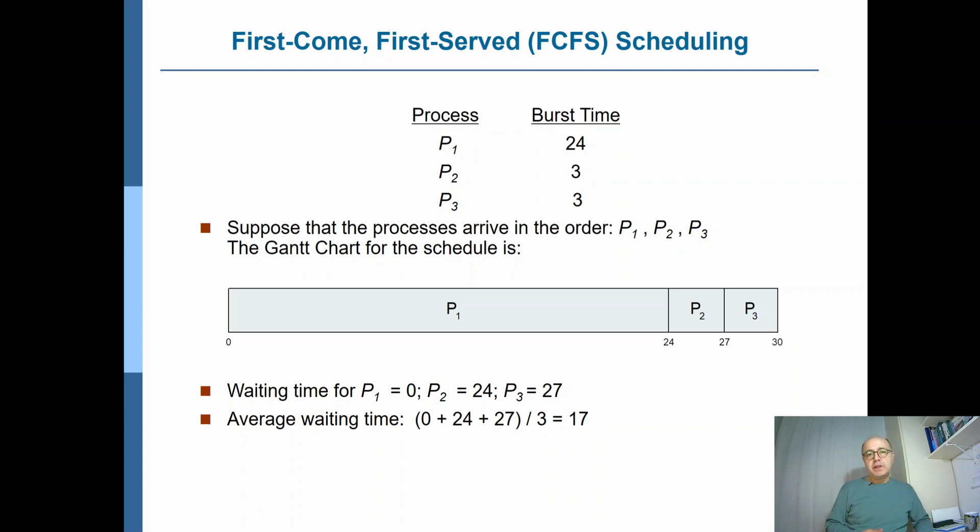FCFS scheduling means when we have multiple processes, the first one that arrives in the system is the first one that goes into the CPU, and the second one is the second one to execute. Of course, when there are multiple processes, they don't all arrive exactly at the same time, so there's always, even if it's small, some small time difference between the arrival of the processes. That's how FCFS is deciding on the order of the processes.